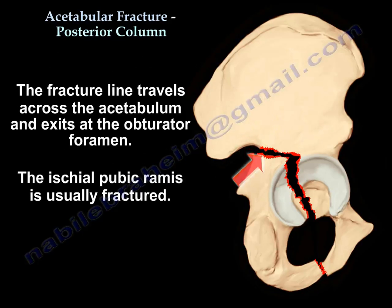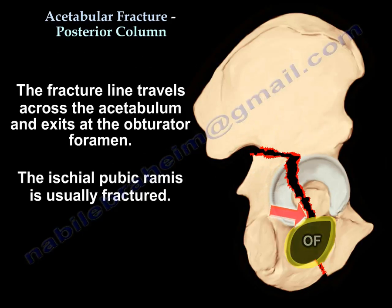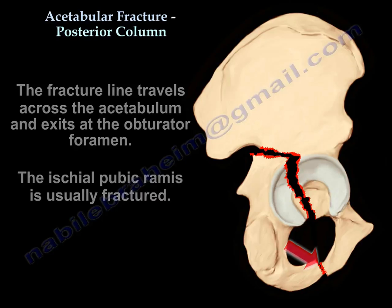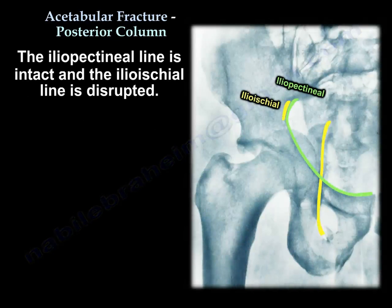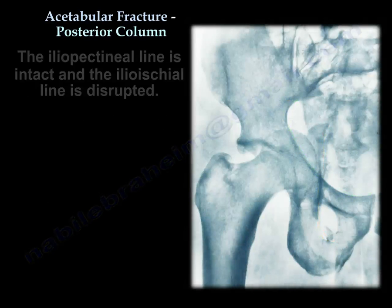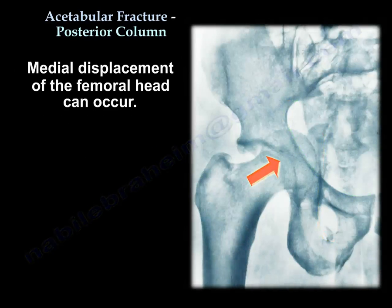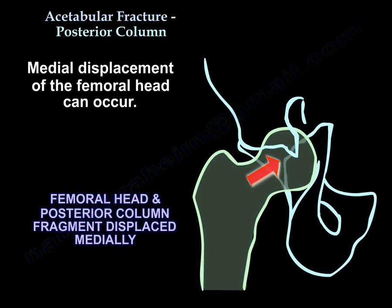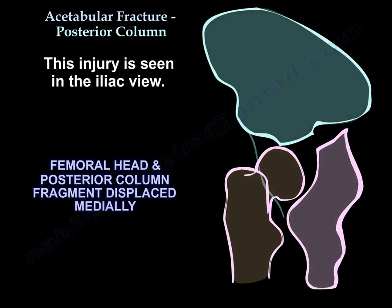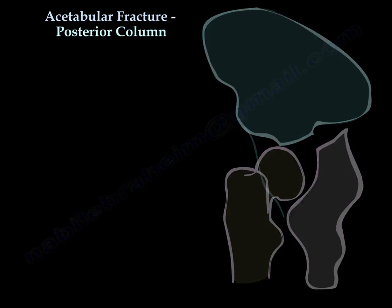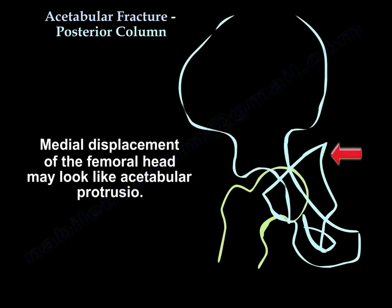The fracture line travels across the acetabulum and exits at the obturator foramen, and the ischial pubic ramus is usually fractured. The iliopectineal line is intact, but the ilioischial line is disrupted. Medial displacement of the femoral head can occur, and this injury is seen in the iliac view. Medial displacement of the femoral head may look like protrusion of the acetabulum.